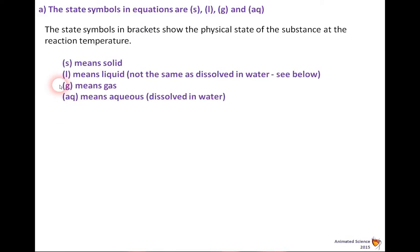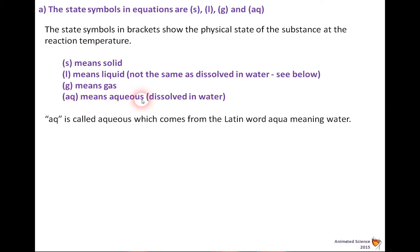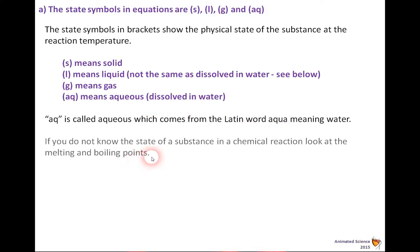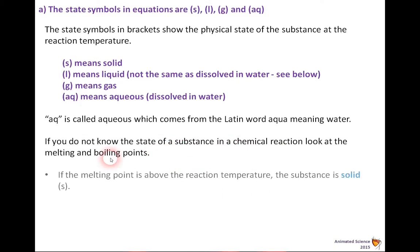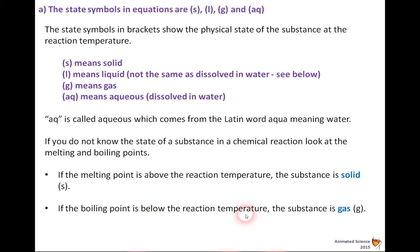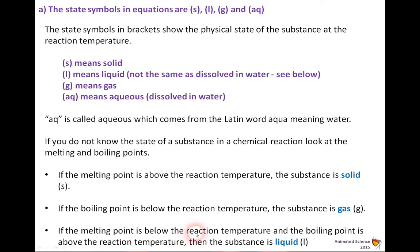State symbols are very simple: S is a solid, L is a liquid — not the same as dissolved in water — G is a gas, and aqueous means dissolved in water, from the Latin word aqua meaning water. If you don't know the state of a substance, look at the melting and boiling points. If the melting point is above the reaction temperature, the substance is a solid. If the boiling point is below the reaction temperature, it's a gas. If the melting point is below and the boiling point is above the reaction temperature, the substance must be a liquid.